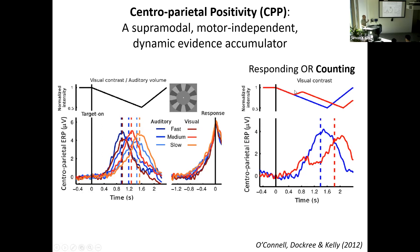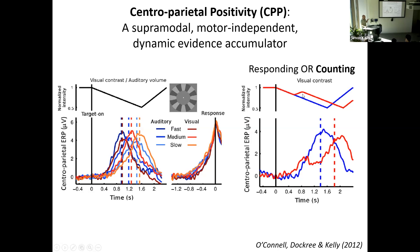The CPP is also very dynamic — in conditions where targets started fading, then increased again, then faded again, the decision signal build-up reflected that quirk in the dynamic signal, tracking cumulative evidence over time rather than just evolving on its own. Critically, when subjects counted targets silently instead of pressing a button, we still saw the signal — hence 'motor independent.' So it's a supermodal, motor-independent, dynamic evidence accumulator.